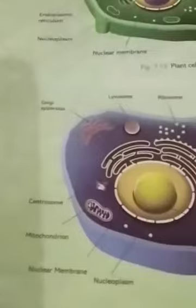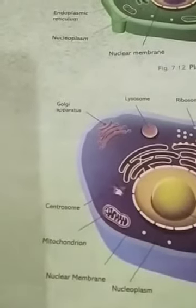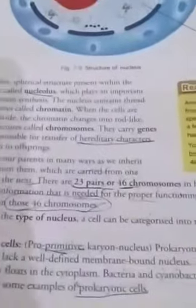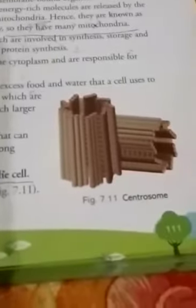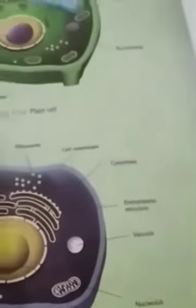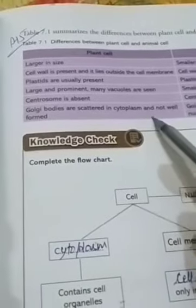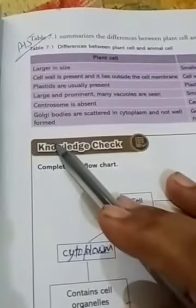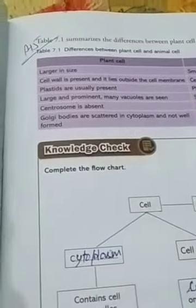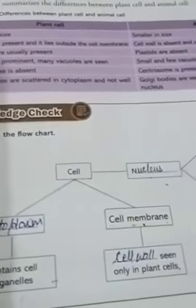The next difference: centrosome is absent in the plant cell while centrosome is present in the animal cell. Here is the centrosome which we discussed in the previous part. This is the structure of centrosome. These are involved in cell division — we will later learn what cell division is. So centrosomes are present in the animal cell only.